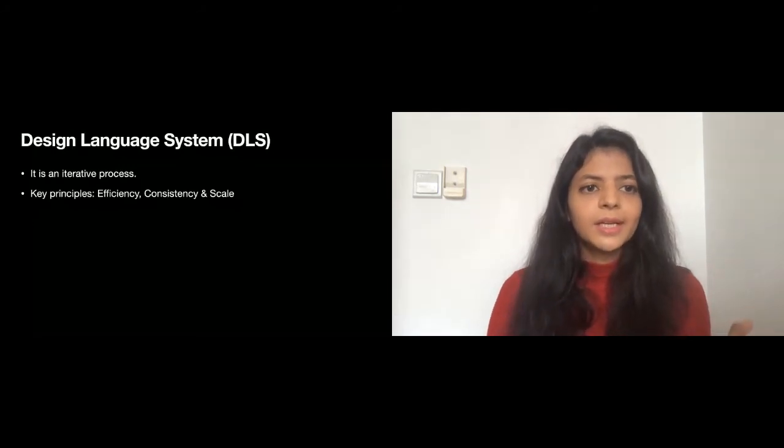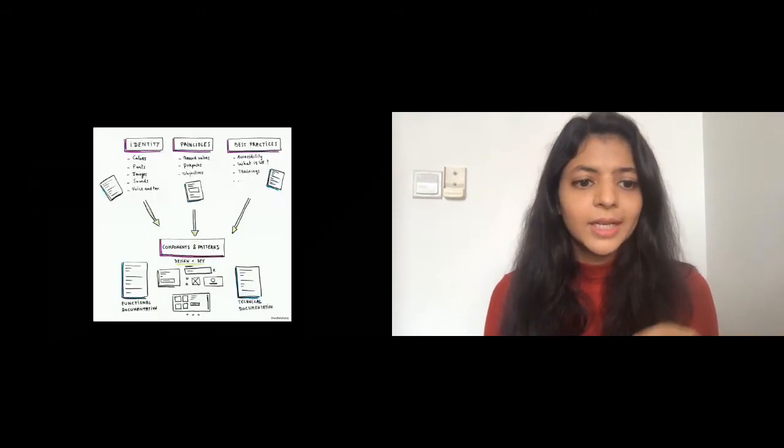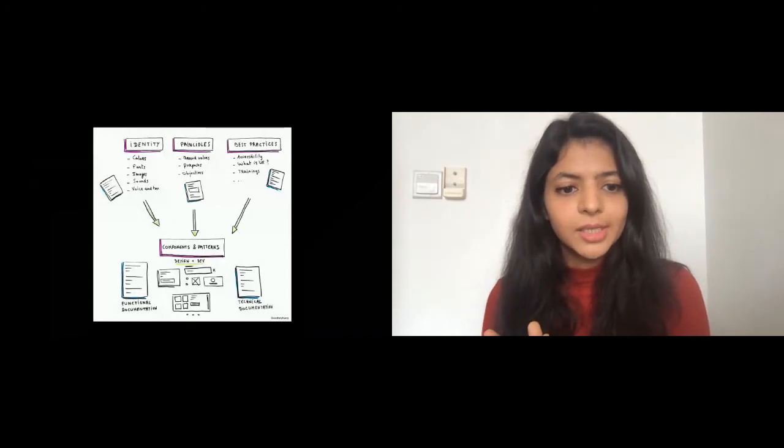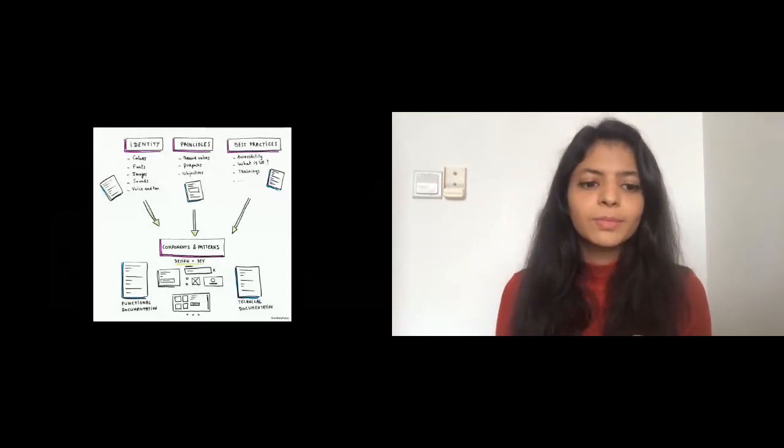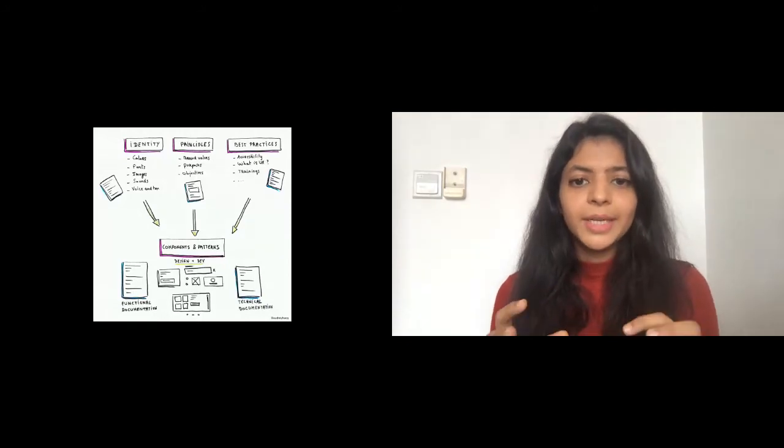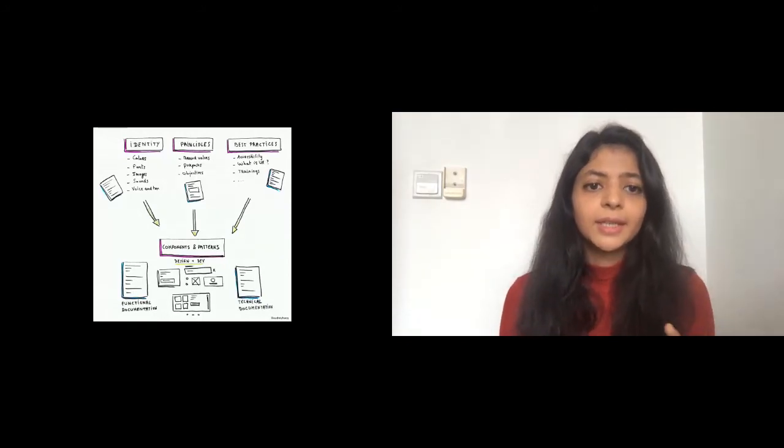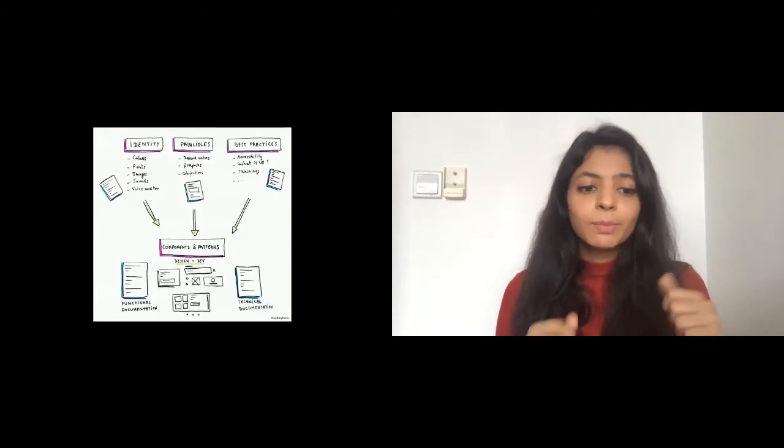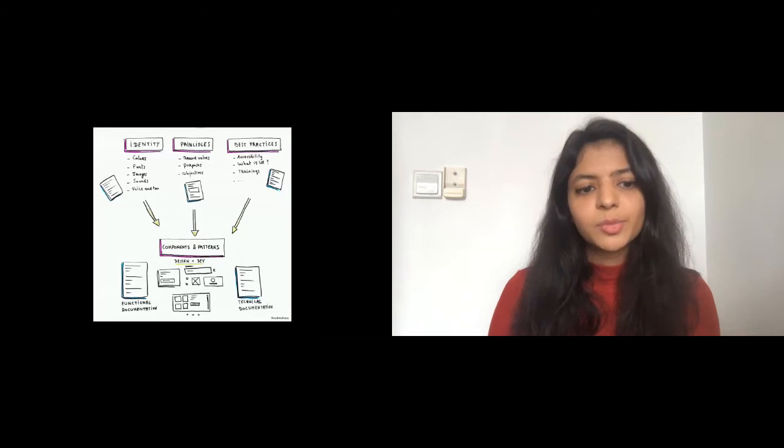This diagram pretty much defines the basic building blocks of your DLS. It consists of identity principles and best practices when combined together to form some smaller components and patterns. These components and patterns are maintained by designers and developer teams to make the best use of DLS to deliver best quality within an optimized product timeline.